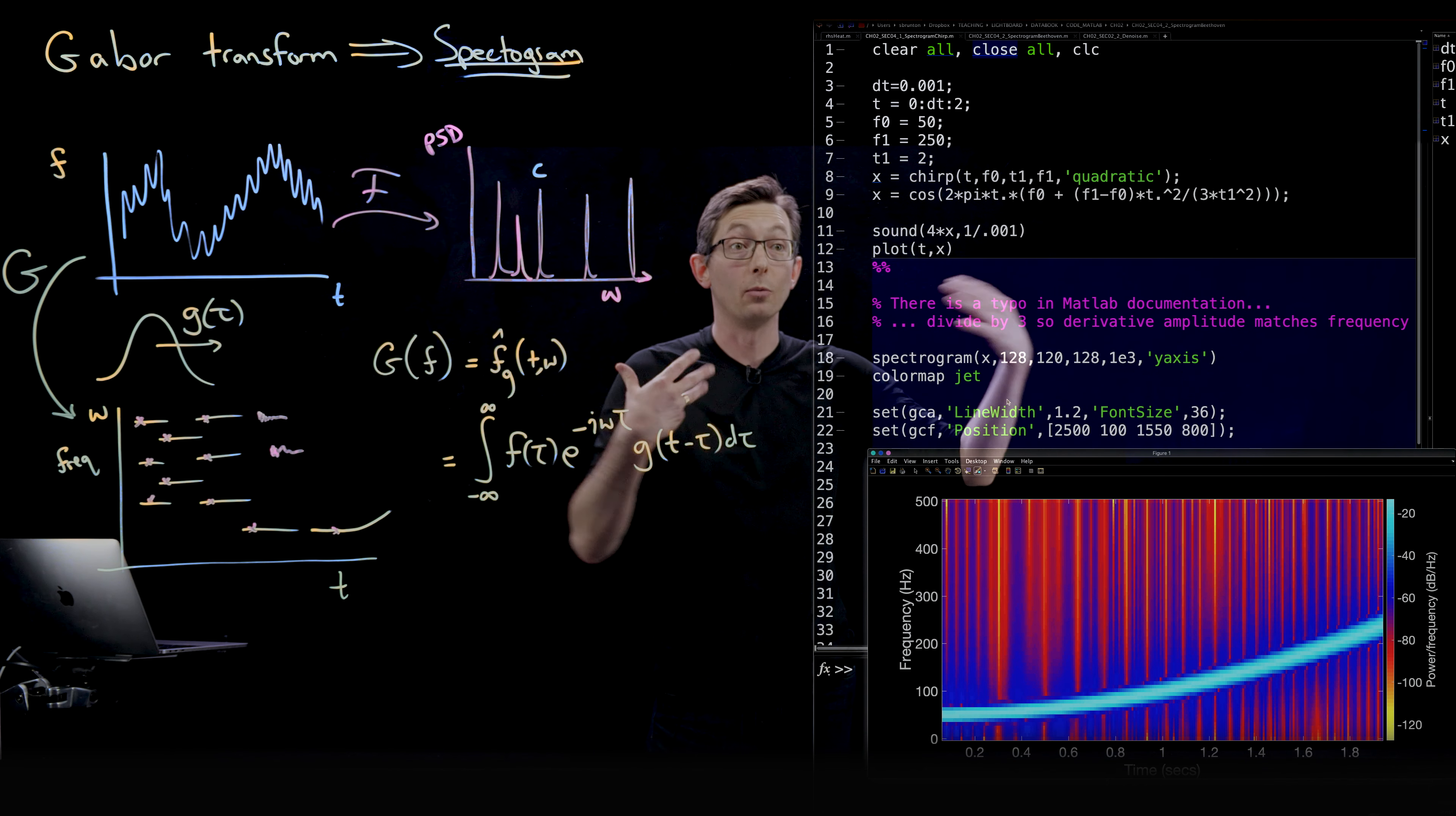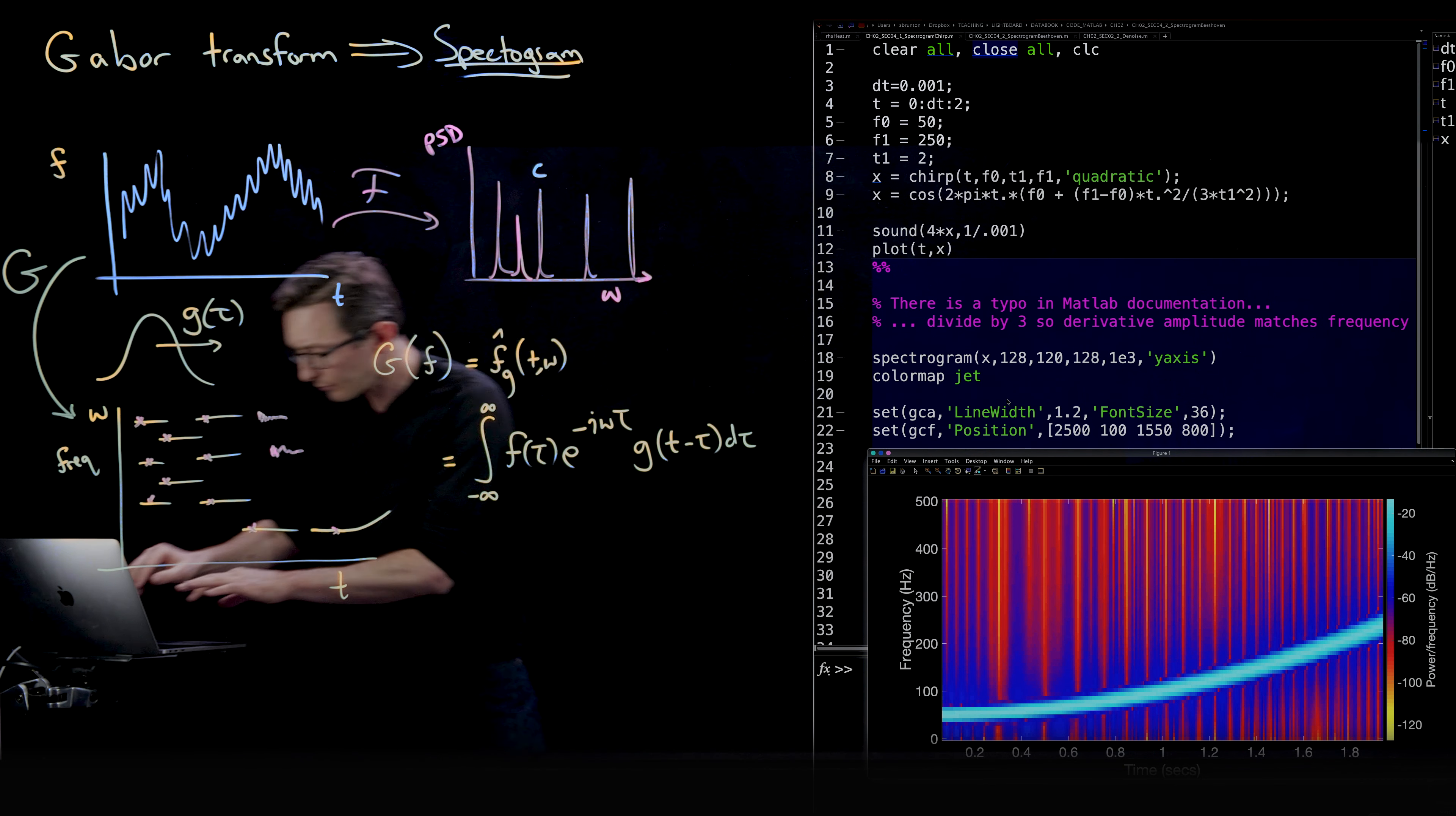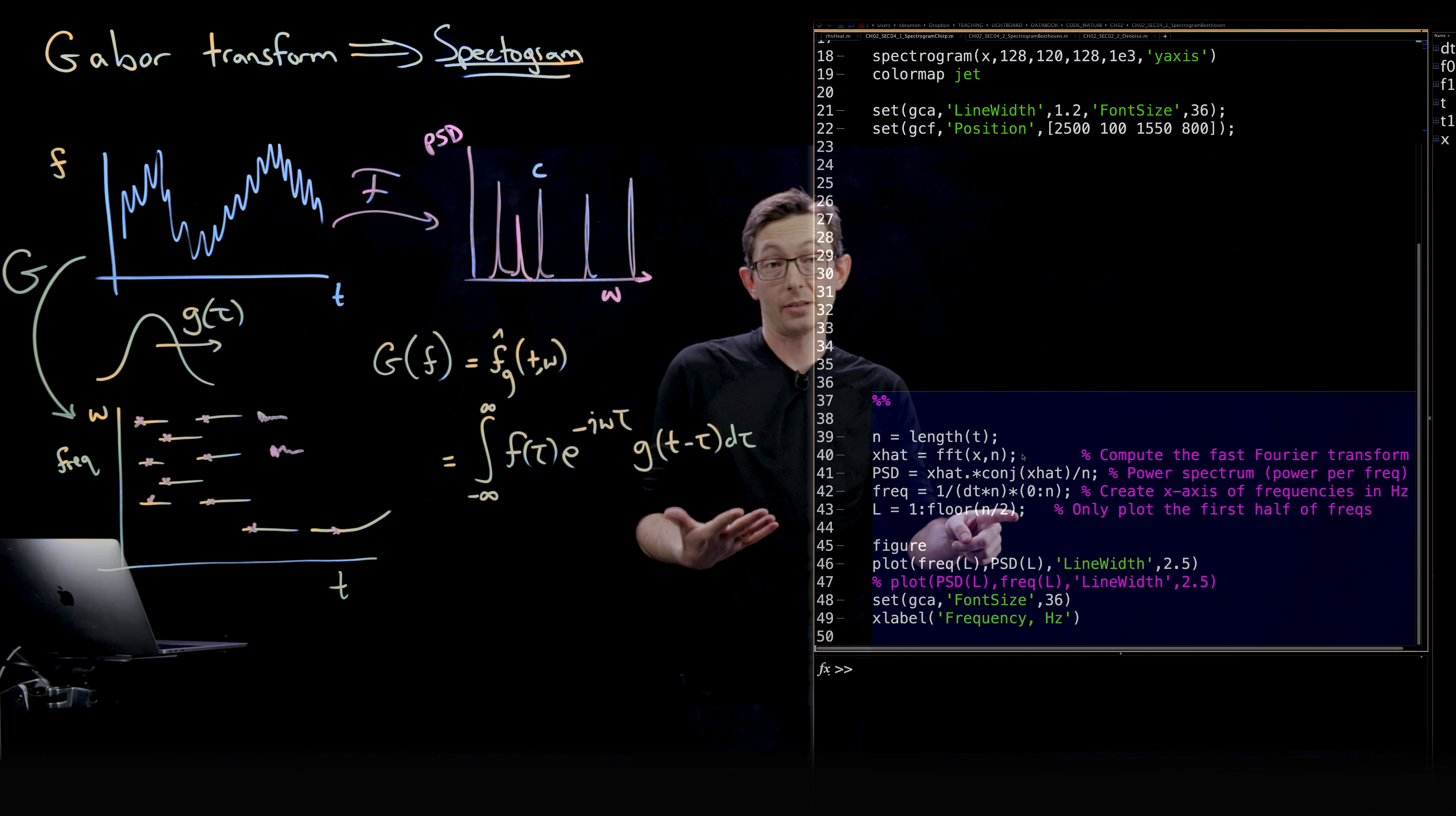This is something we do in our book, Data-Driven Science and Engineering, where this example comes from in Chapter 2. I thought it would be fun to also plot what does the Fourier transform look like? What if I just did the naive Fourier transform instead of this kind of time frequency spectrogram? So I'm going to show you that plot. You could just do the normal thing where you compute the FFT of the entire audio signal all at once, and then plot its power spectrum.